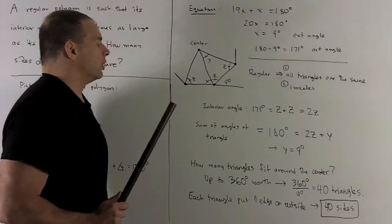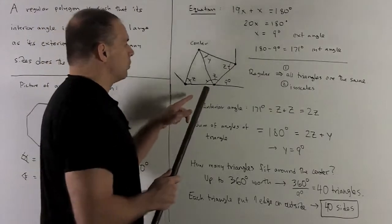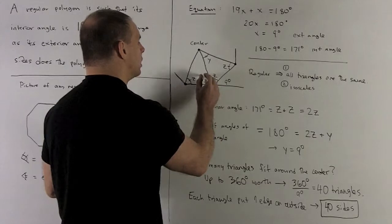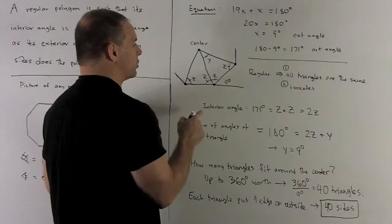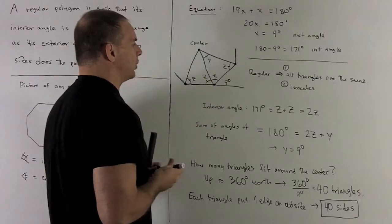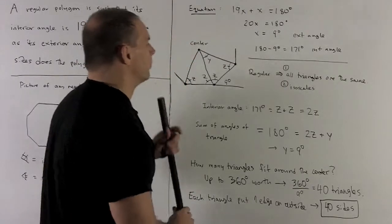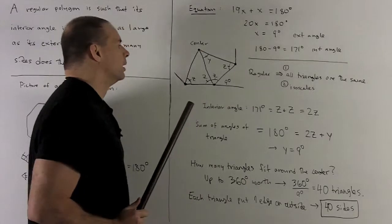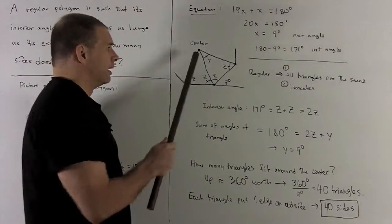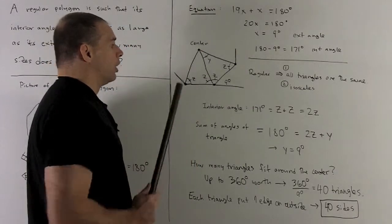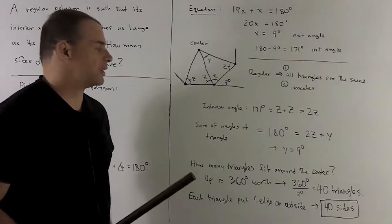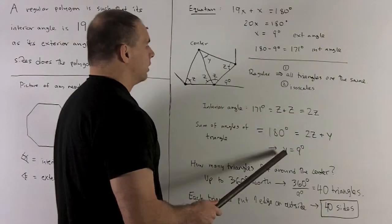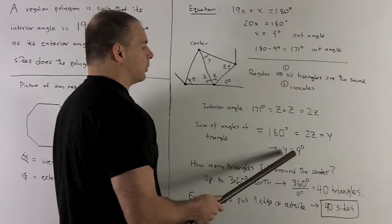Now, note our interior angle is going to be equal to the sum of these two guys here. So it's going to be z plus z gives me my interior angle, which is 171 degrees. So we have 2z equals 171. I also have, since this is a triangle, the sum of the angles has to be equal to 180 degrees. Putting these together, we're going to note that's going to mean this inner angle here is going to be equal to 9 degrees.